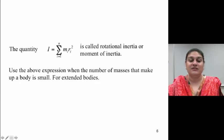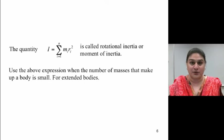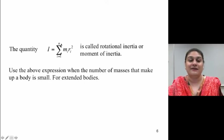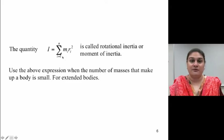The quantity I equals summation, i goes from 1 to n, mi ri squared, is called the rotational energy or the moment of inertia. So use the above expression when the number of masses that make up a body is small, or for extended bodies. So basically, the idea is, if you were to be asked what the moment of inertia of any object was, you need to go to table 8.1 in your book and figure out the quantity that you need. All of the moment of inertia will have the term MR squared, however, the constants that they are multiplied with are going to be different depending on what type of object is being asked for.